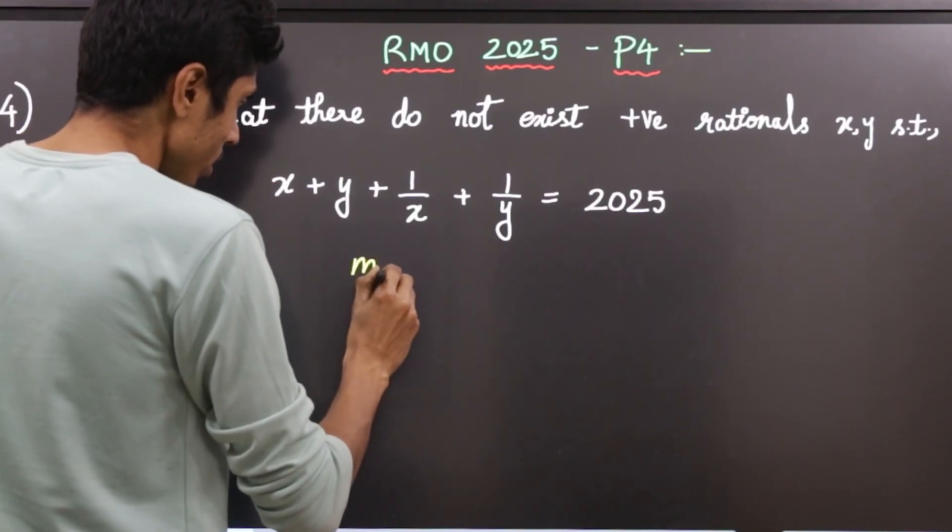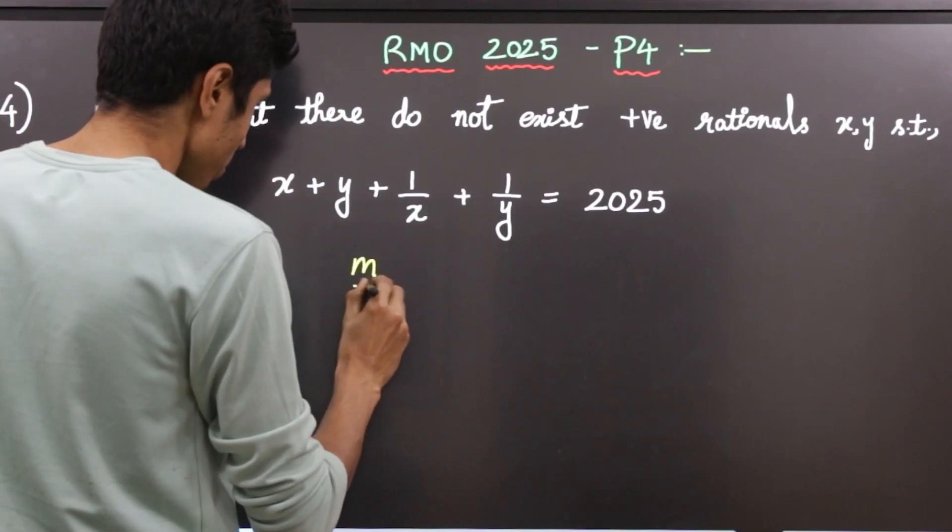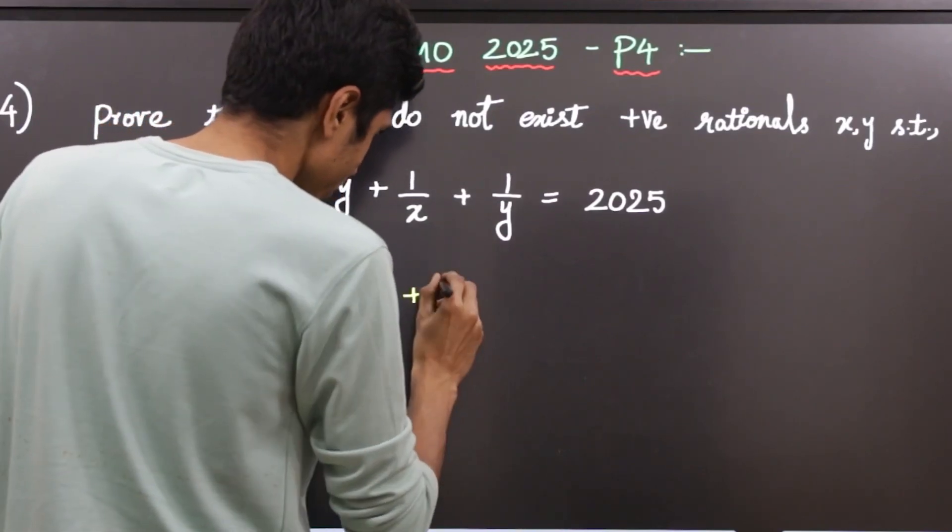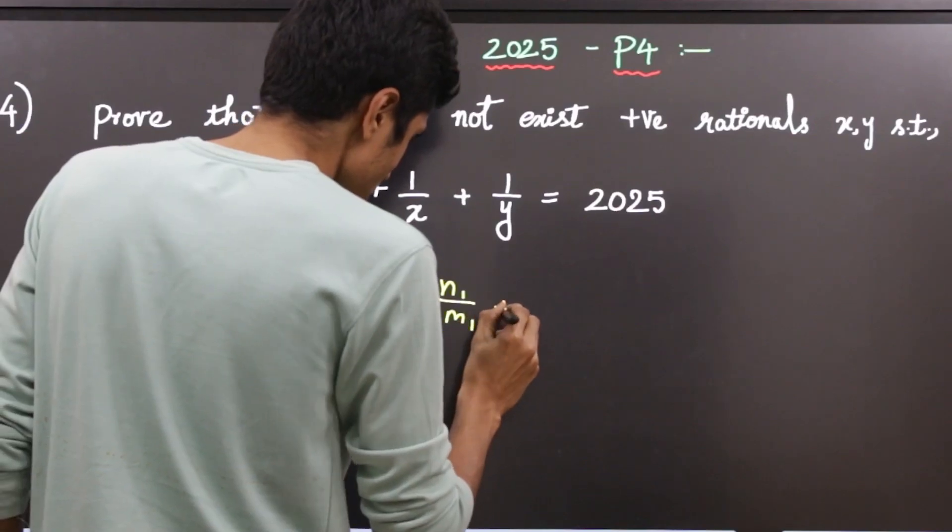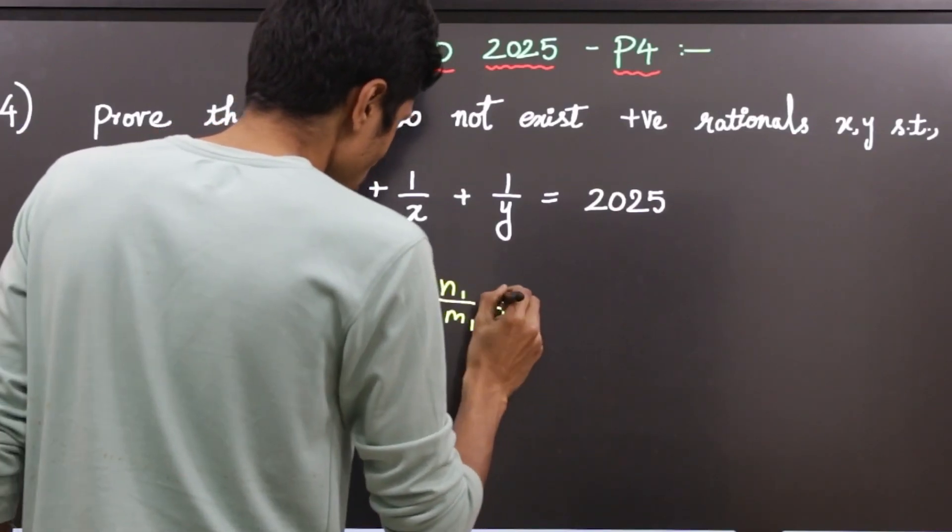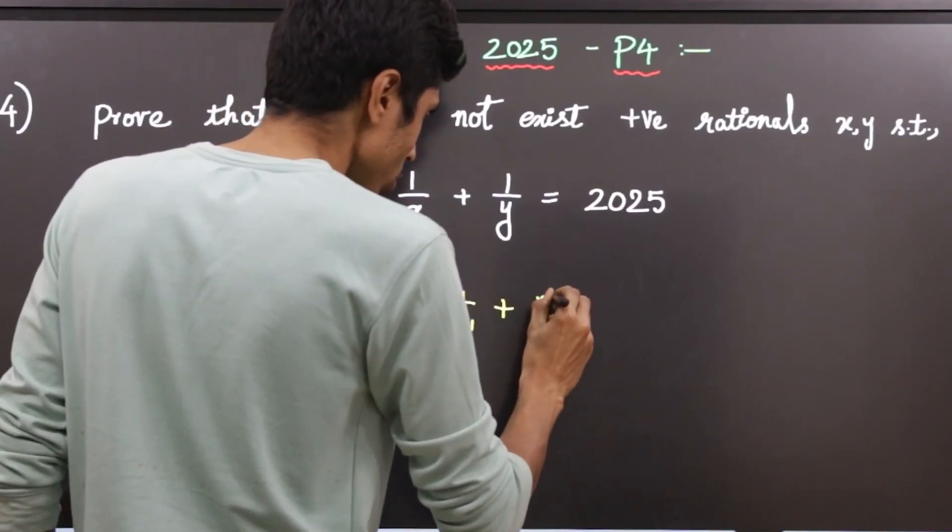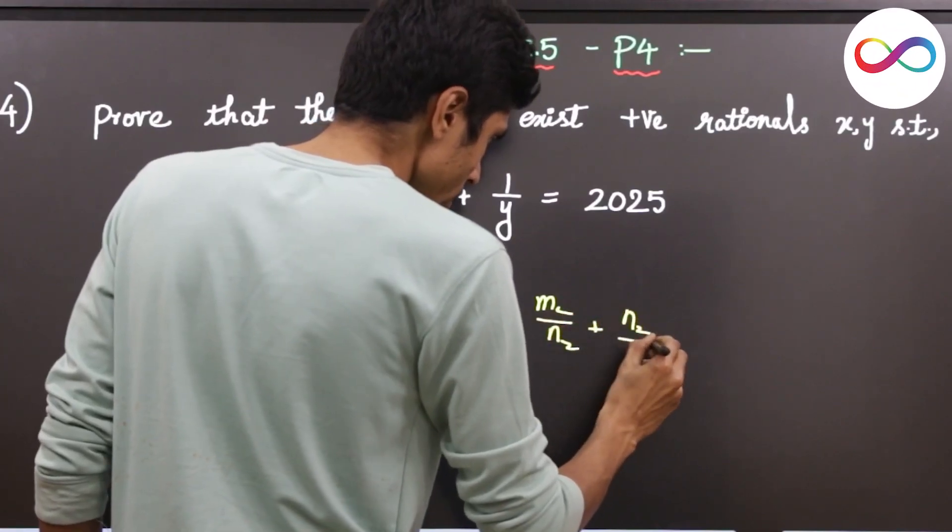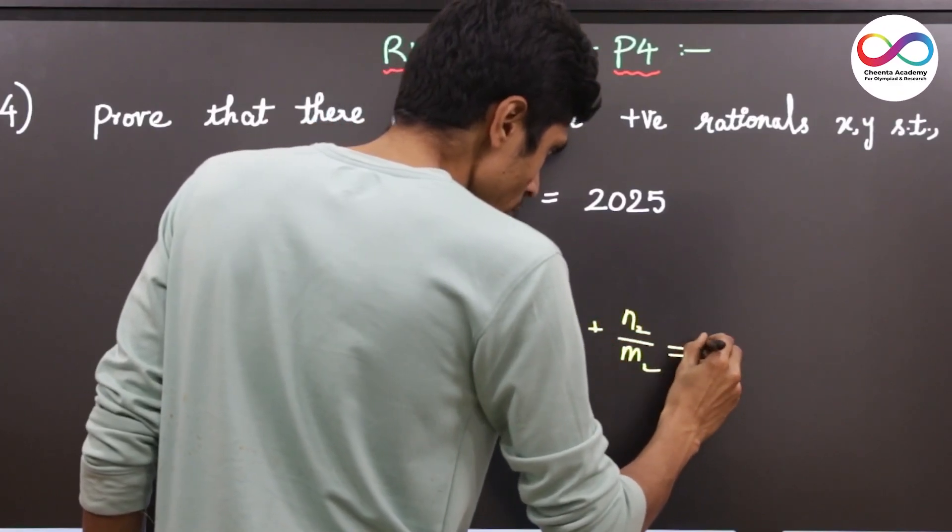Upon substitution, you get m1 by n1 plus n1 by m1 plus y plus 1 by y, that is m2 by n2 plus n2 by m2 equal to 2025.